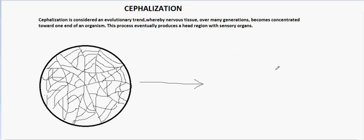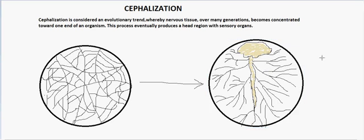Now let us see what happens when an organism starts to show cephalization. I've drawn a brain here — a bundle collection of millions of neurons, depending on the complexity of the organism. A large amount of nervous tissue has concentrated towards one side, and the peripheral nervous tissue has developed from it. Why does this organism develop bilateral symmetry?